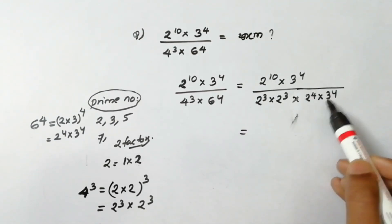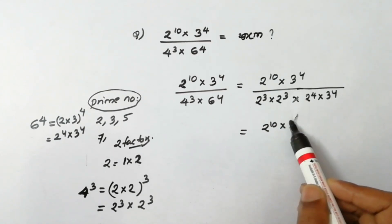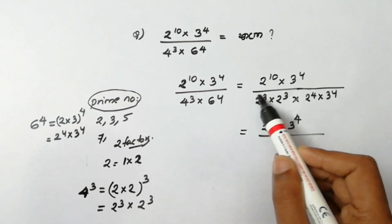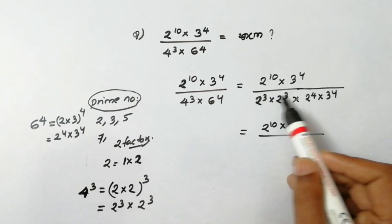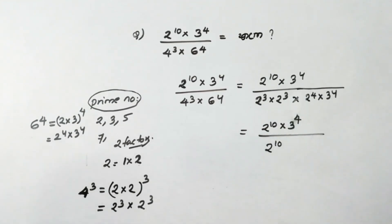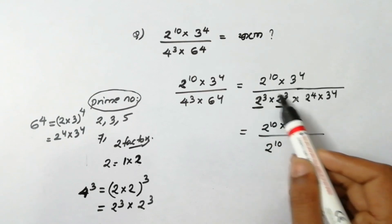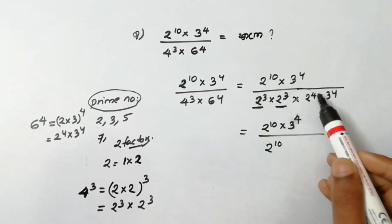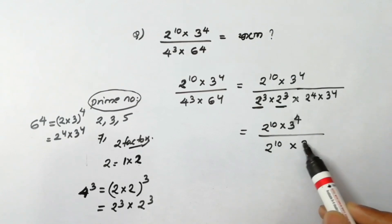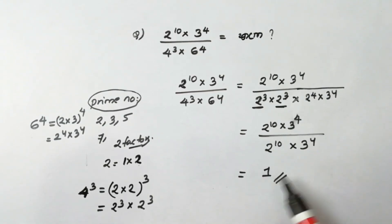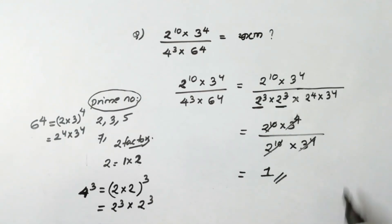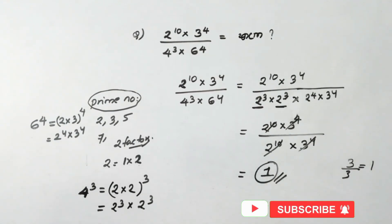Now, 2 raised to 10 in the numerator and 3 raised to 4. At the denominator we have 2 raised to 6 and 3 raised to 4. Using the division rule: 2 raised to 10 divided by 2 raised to 6 leaves 2 raised to some power, and 3 raised to 4 divided by 3 raised to 4 gives 1. The numerator is 1, and the answer is 3 by 3, which gives 1.